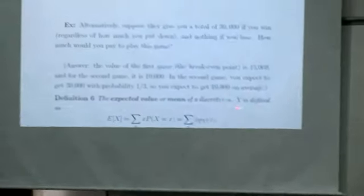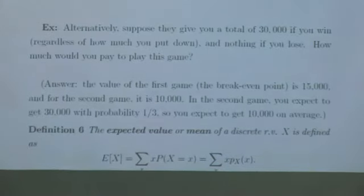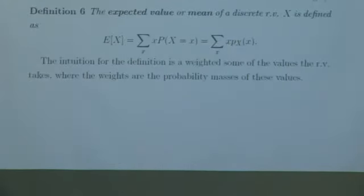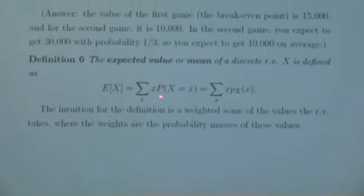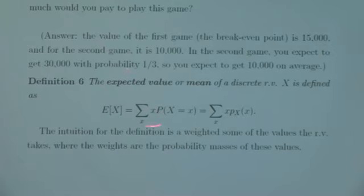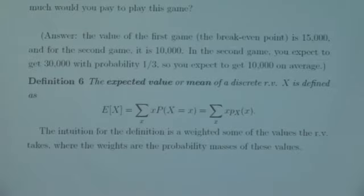The expected value or the mean of a discrete random variable x is defined as: E[x] equals the summation over all values that x can take of the value x times the probability that the random variable takes that value. So it's the value times the probability mass of that value, summed over all possible values of the random variable.